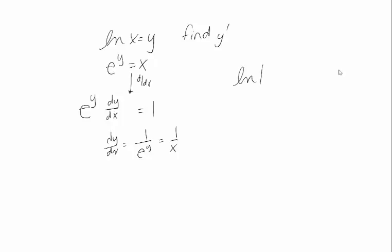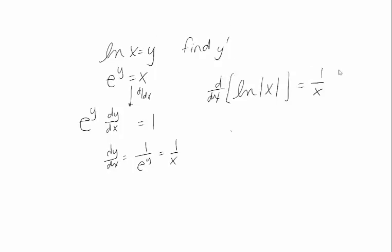We can say something more general. If I have the function log of absolute value of x, then its derivative is 1 over x. If x is positive, log of absolute value of x is the same as log of x. If x is negative, we have to put the absolute values in there because we can't take the log of a negative number. If we think about the chain rule, this means that the derivative of log of a function — that's not 0, because we can't take the natural log of 0 — if that function were x the derivative would be 1 over x, but it's f of x, so we have to multiply by the derivative. This is going to be useful because I know the logarithm of a function, and when I use a logarithm I have all of these nice log rules that I can use to simplify my expression.